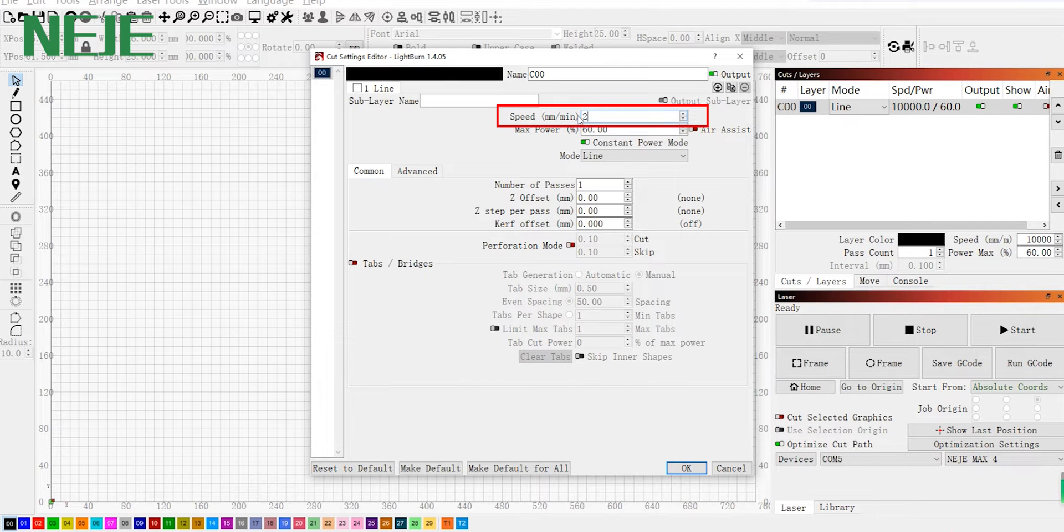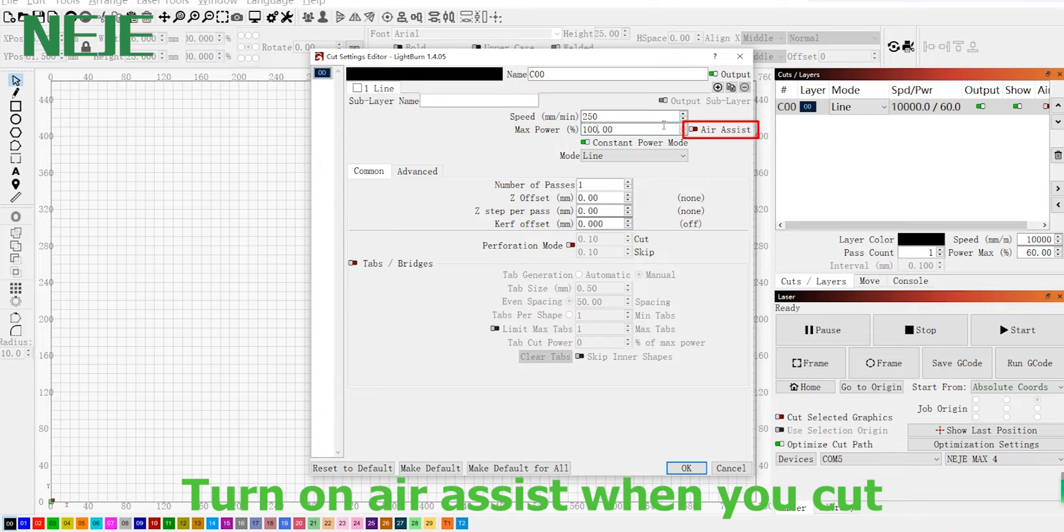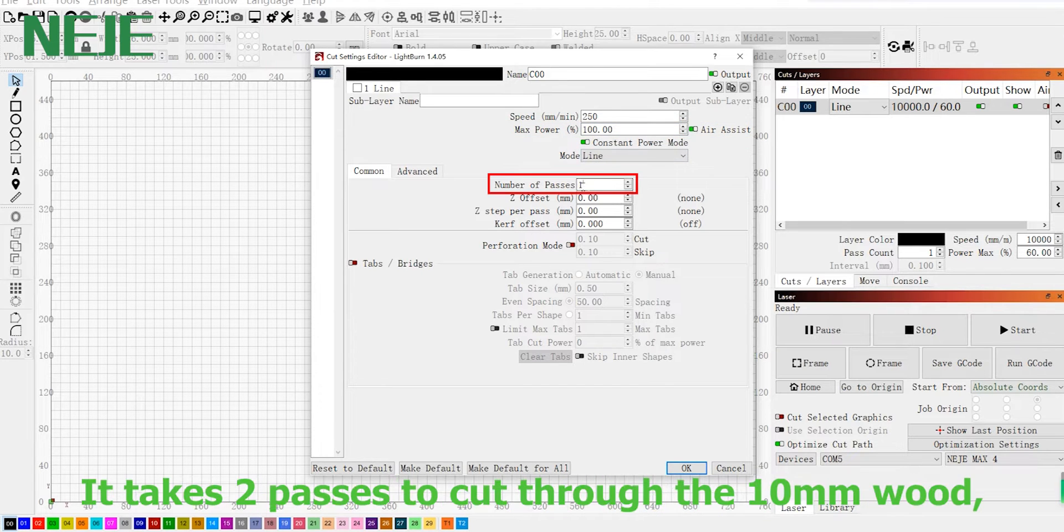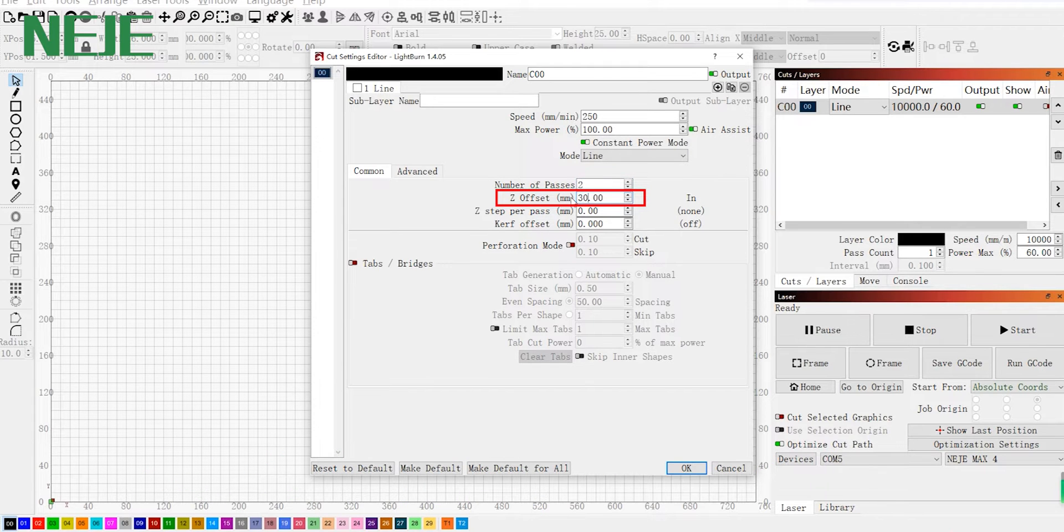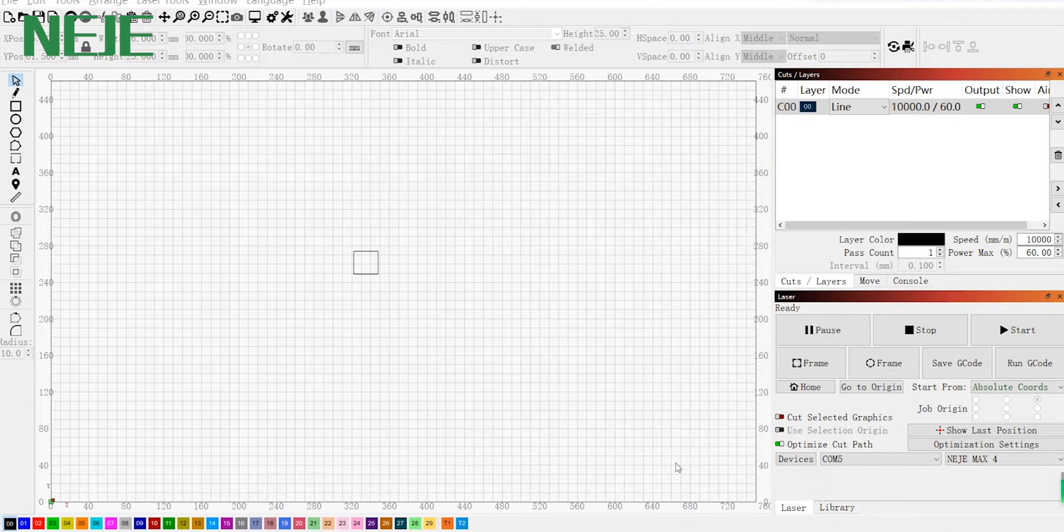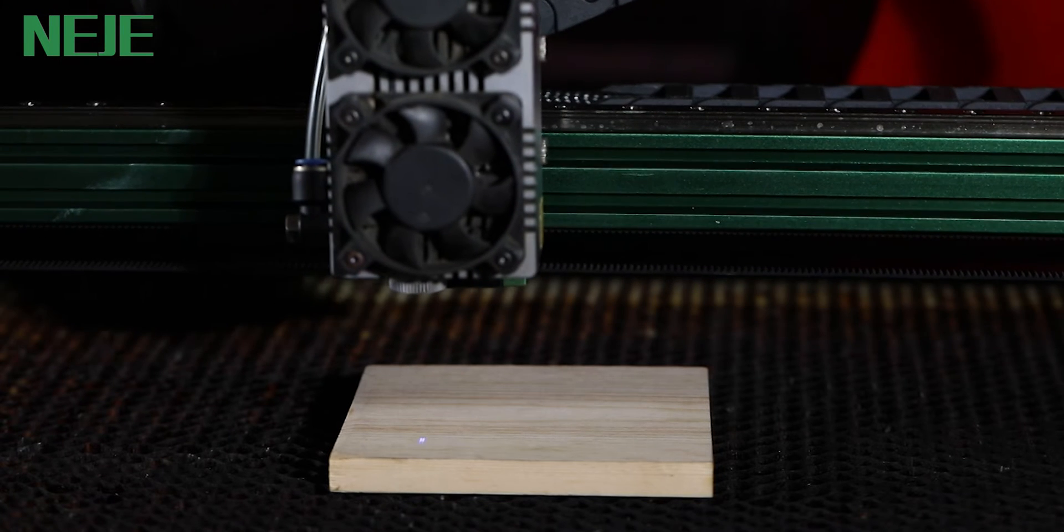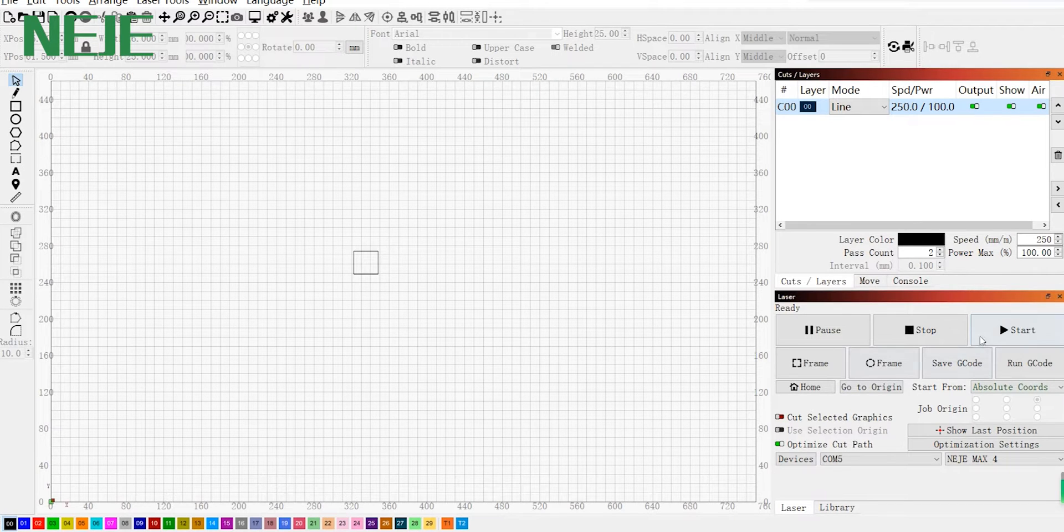We set the speed, the power, and it takes two passes to cut through. And set this stepper pass for the second pass. I want it to be 4. All right, all done.